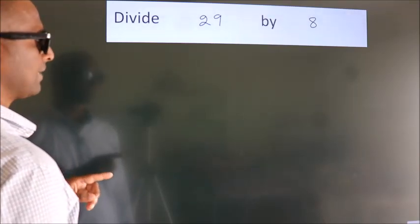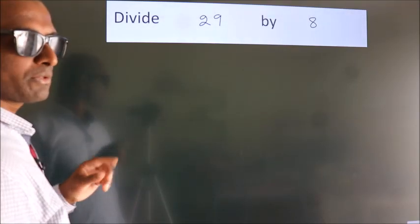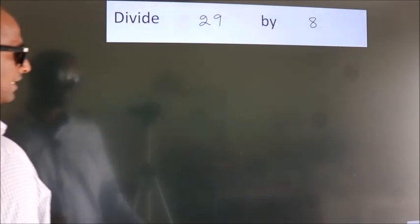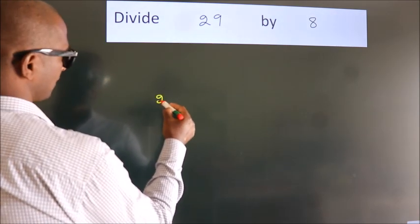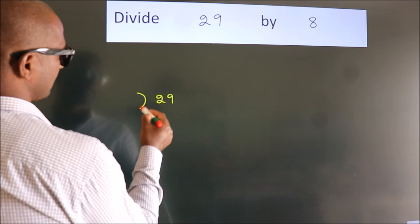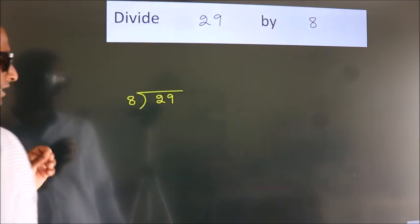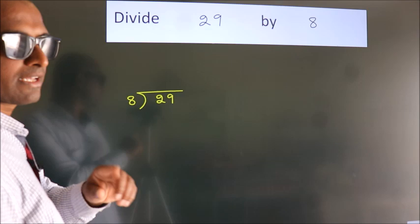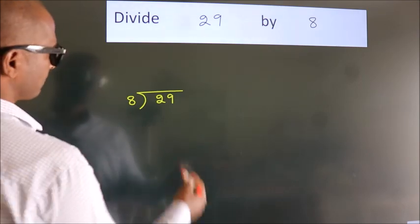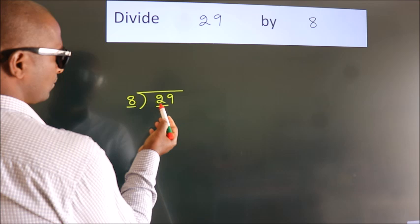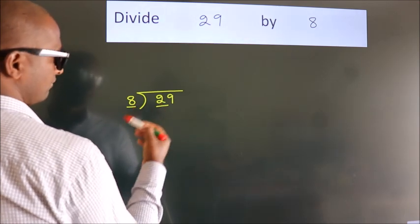Divide 29 by 8. To do this division, we should frame it in this way: 29 here, 8 here. This is your step 1. Next, here we have 2, here 8. 2 is smaller than 8, so we